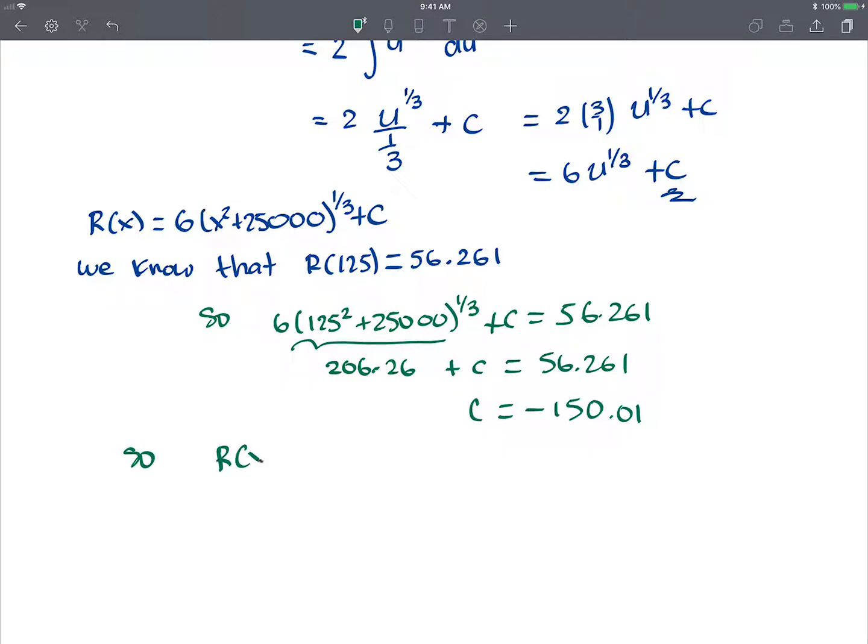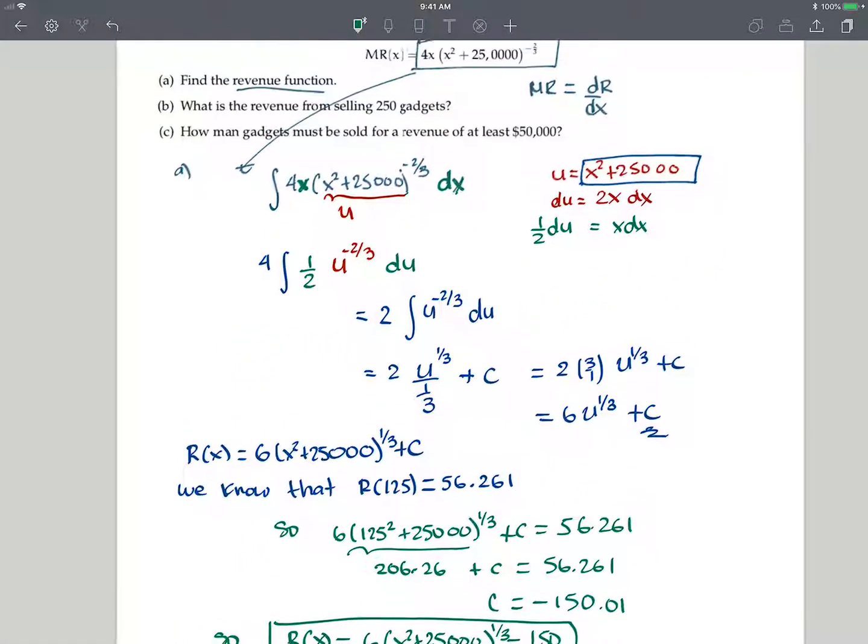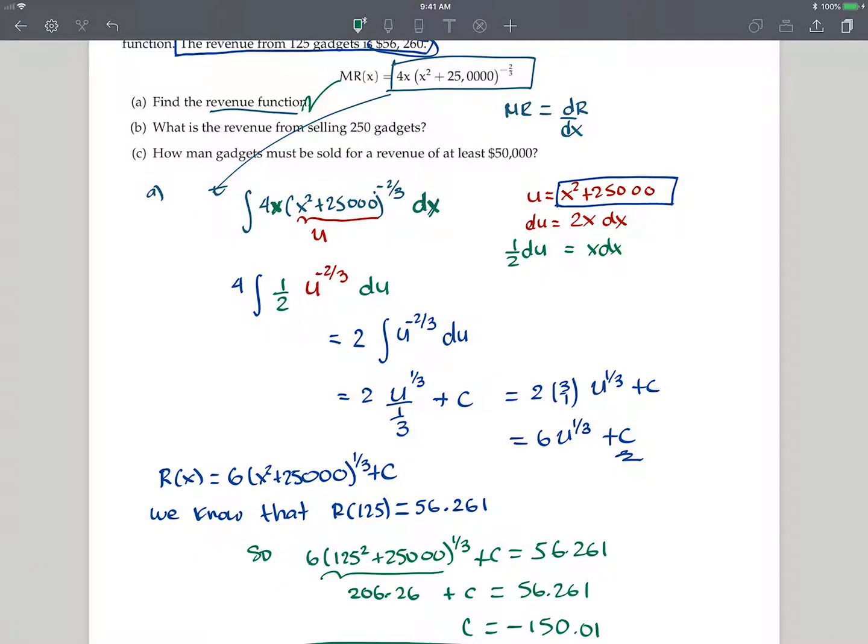So this is how you find your constant. And your revenue function becomes 6 times x squared plus 25,000 to the 1/3 minus 150. That's the work for part A. Okay? So that's part A. Let me scroll up so we can see what happened. Now we've got this one covered, the revenue function.